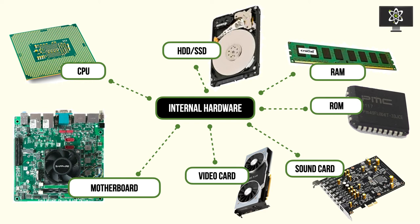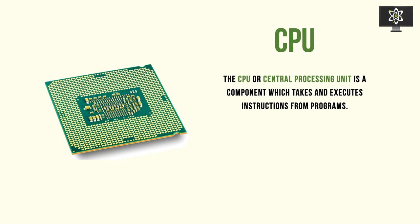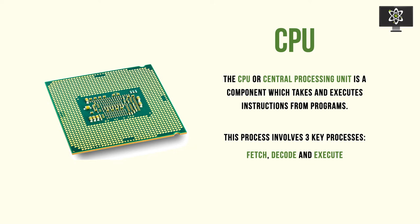The CPU, or Central Processing Unit, is the hardware responsible for taking, interpreting, and executing instructions from your programs - it executes code. The process by which it does its job is fetching, decoding, and executing. A lot of educational systems don't teach in depth about the CPU cycle, but these key processes are critical and operate on every single device with a CPU in the world.